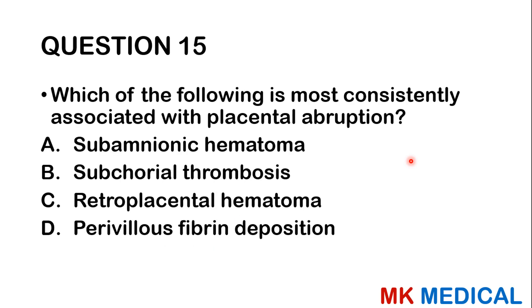Question fifteen: Which of the following is most consistently associated with placenta abruption? A, sub-amnionic hematoma; B, sub-chorion thrombosis; C, retroplacental hematoma; D, perivillous fibrin deposition. The answer is most likely a retroplacental hematoma — we see that consistently in patients with placenta abruption.